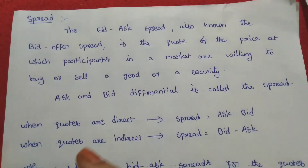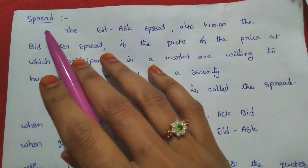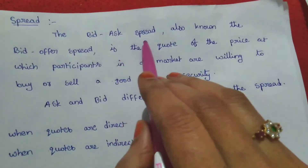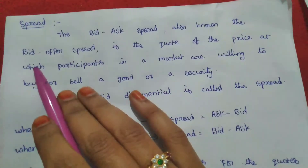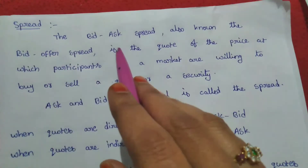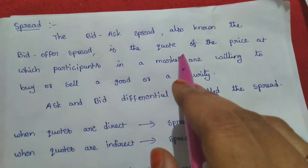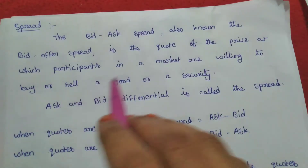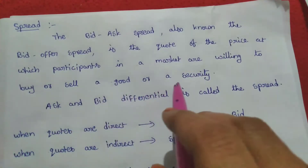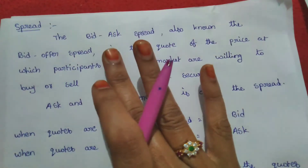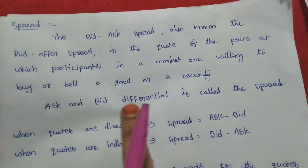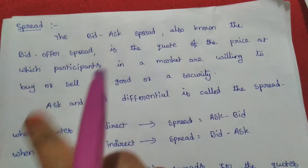Hi everyone, today in this video we shall learn about bid and ask spread. The bid-ask spread, also known as the bid-offer spread, is the quote of the price at which participants in a market are willing to buy or sell a good or a security. The spread is the difference between the ask and bid — this differential is called the spread.